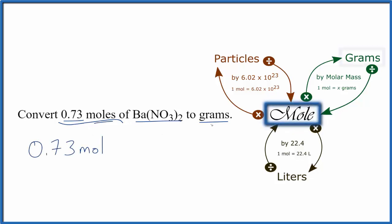So we go from moles to grams. We're going to multiply by the molar mass, and we find the molar mass here for barium nitrate by going to the periodic table and adding up the masses of all the elements.